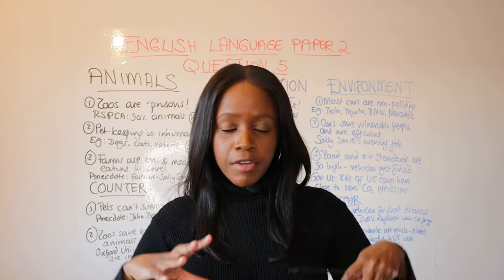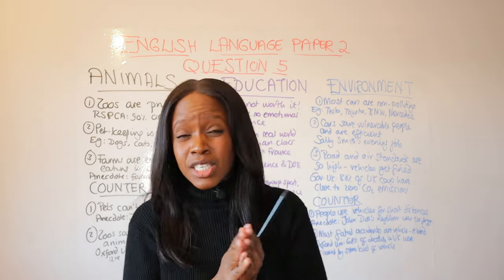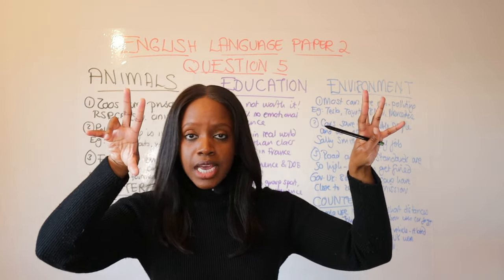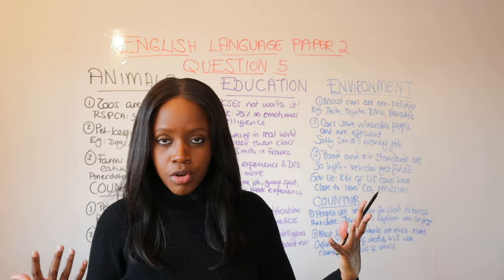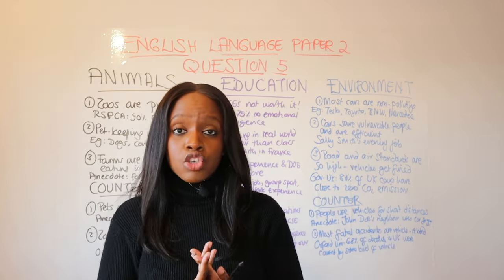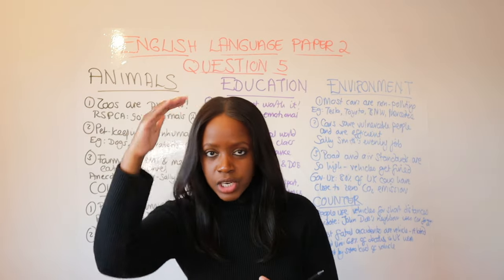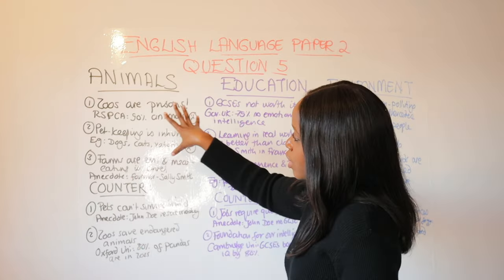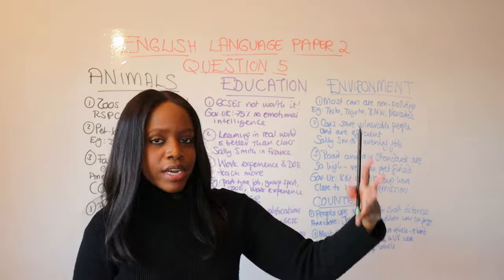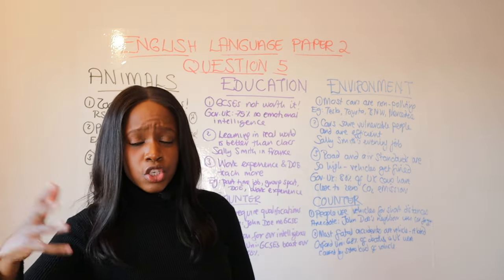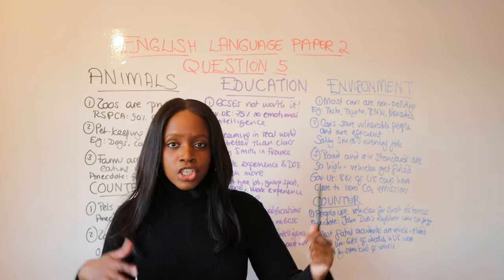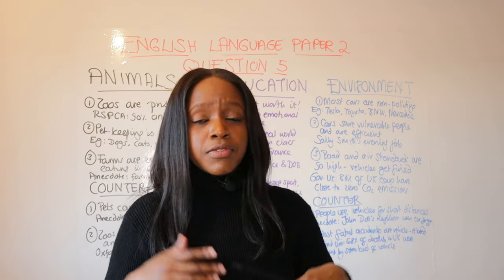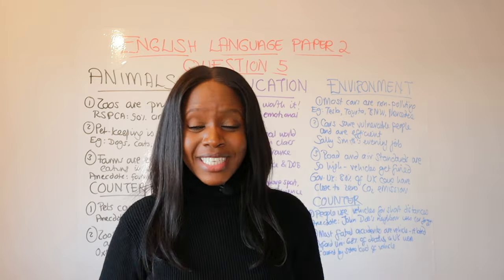When it comes to preparing for language paper two, question number five in your GCSEs, it's actually quite easy to prepare as long as you understand the major subject areas and have some kind of opinion on them. This part of the paper tests your awareness of topical issues, so list out all the major topics and have quick plans ready. I hope this helped — please let me know what else you'd like to see on this channel.